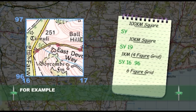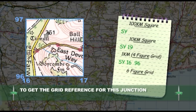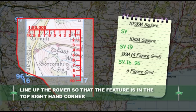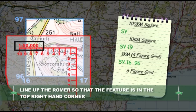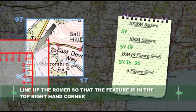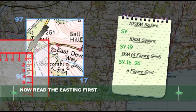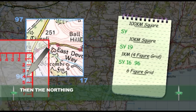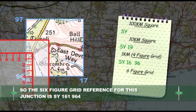For example, in order to obtain a grid reference for this junction, line up the ROMA — making sure it is the correct scale for the map you are using — so that the feature is in the top right-hand corner of the ROMA. Now, read the Easting first, in this case 1, then the Northing, 4. So, for this junction, the 6-figure grid reference is SY161964.